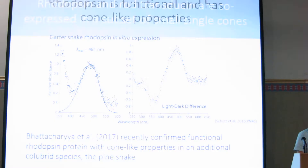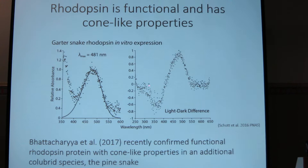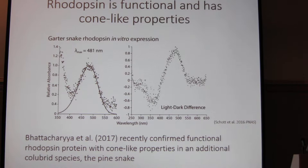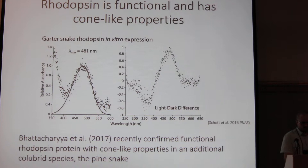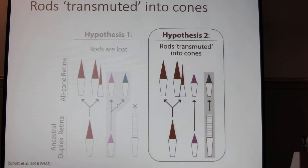We then characterized the rhodopsin protein in vitro and found that it was both blue-shifted and had a more cone-like function. We recently confirmed this with an additional species of colubrid snake less closely related to the garter snake, the pine snake, and confirmed some additional cone-like properties in its rhodopsin. With this, we have good support for our second hypothesis and reject the one that supported that rods were simply lost.